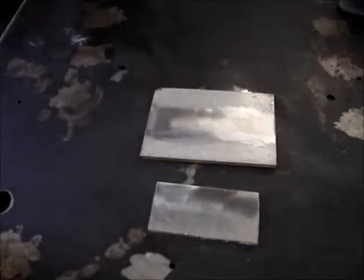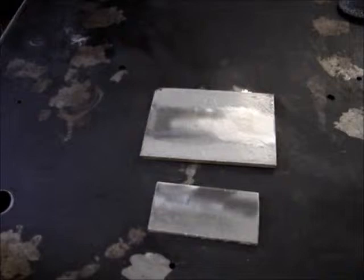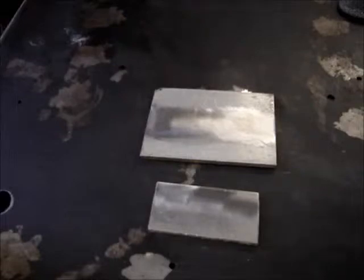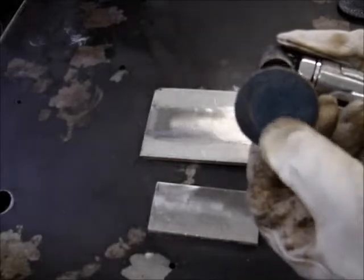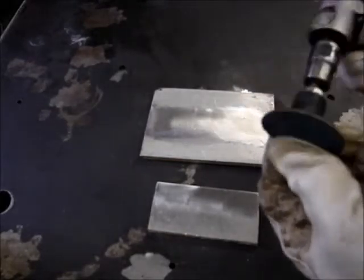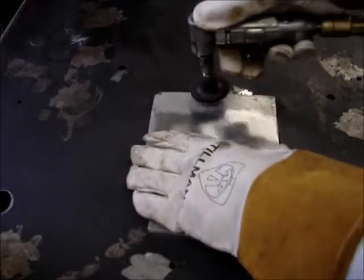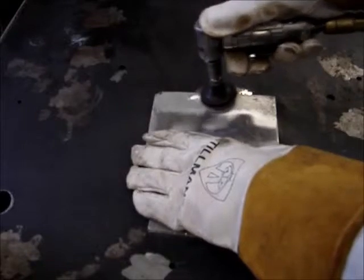In video number two, I touched on abrasives. As you can see, this material, I've cleaned some of this up already. You can see it's kind of shiny, but I wanted to run through some of the abrasives. I spoke about the angle grinder and utilizing the different grits of sandpaper. I will show you what those different grits do on the material.